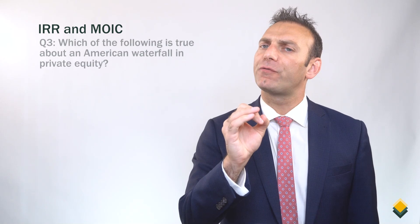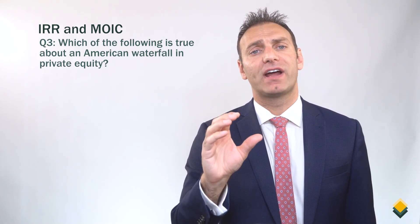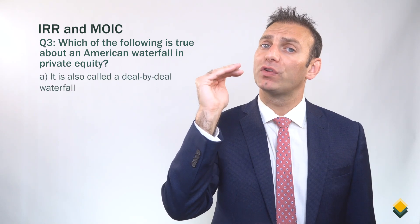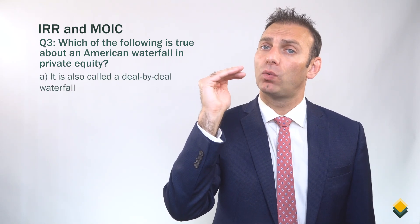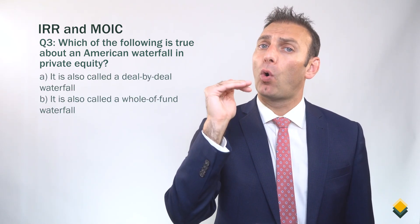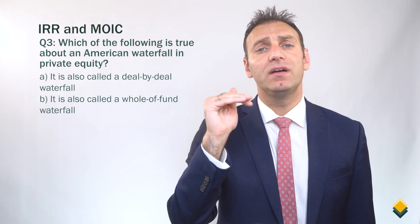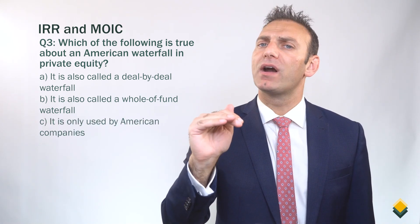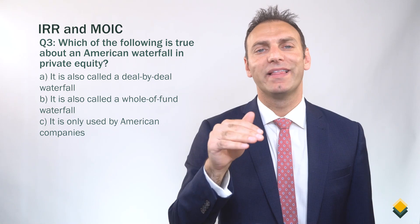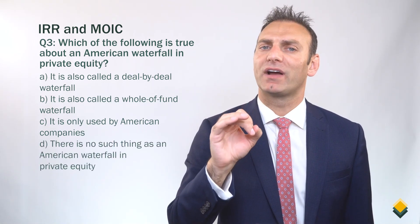Let's move on to question number three. Which of the following is true about an American waterfall in private equity? A: it is also called a deal-by-deal waterfall. B: it is also called a whole-of-fund waterfall. C: it is only used by American companies. Or D: there is no such thing as an American waterfall in private equity.